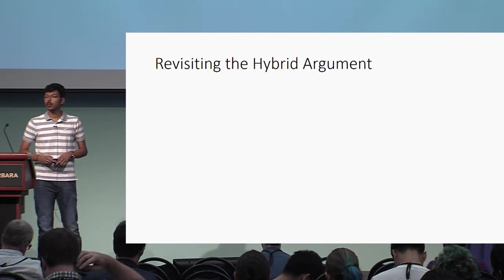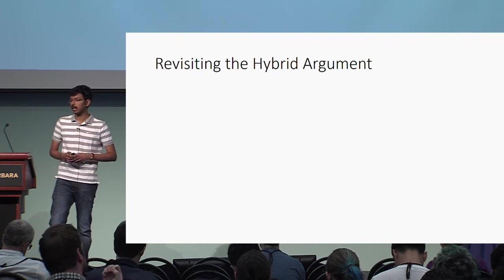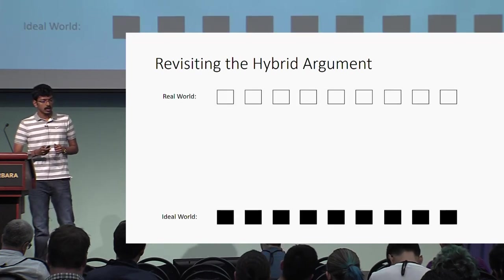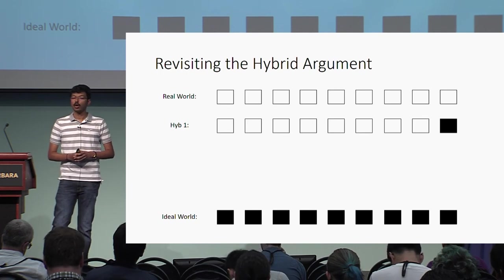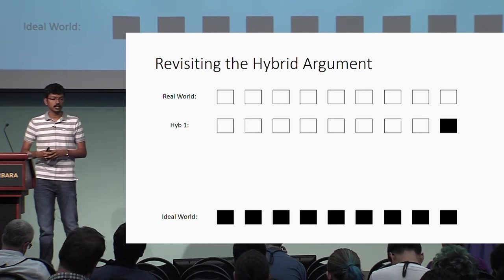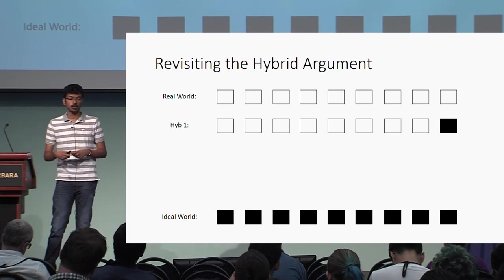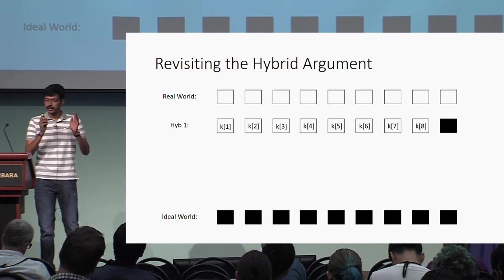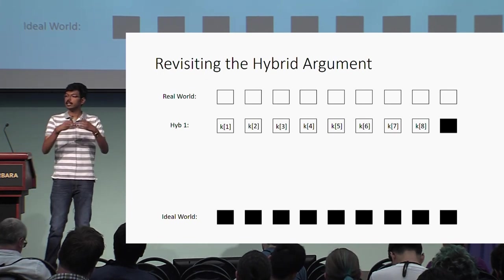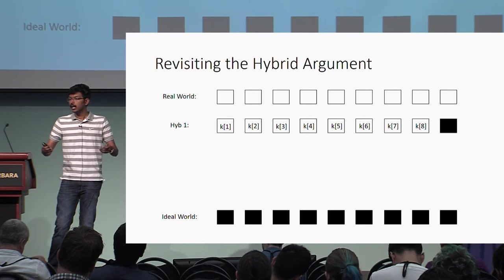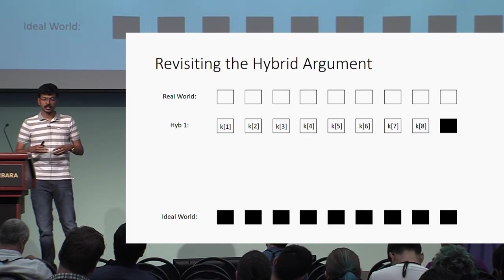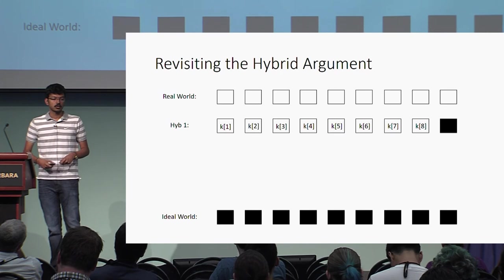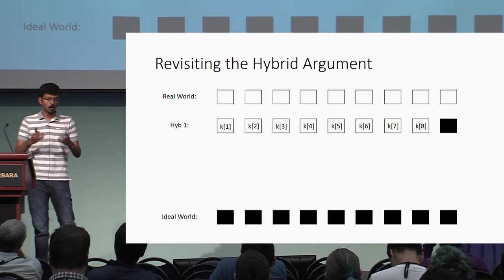Let me explain how this enables the hybrid argument. Consider the first hybrid: we want to change the last step circuit to a dummy, meaning we change the value it writes to some junk value. We can directly use the security of timed encryption, because it guarantees that even given time-constrained keys K1 through K8, the encryption generated with respect to timestamp nine — which is what the last step circuit produces — still has semantic security. This is how we overcome the challenge with location-based encryption.